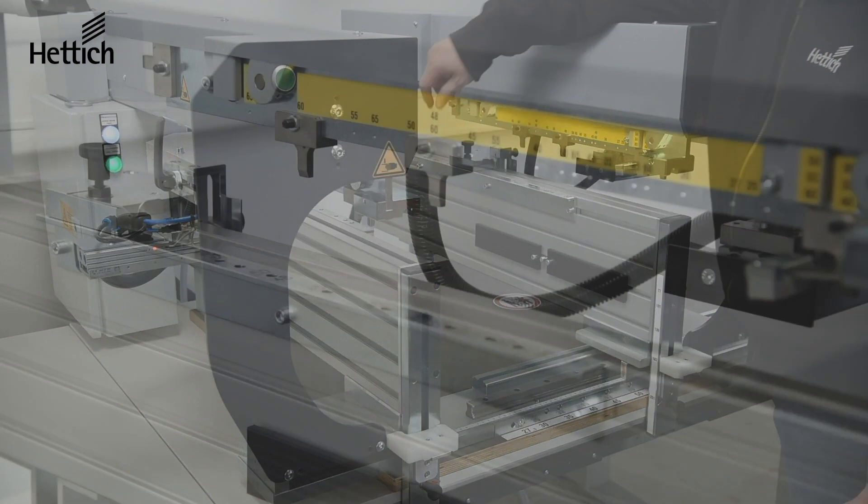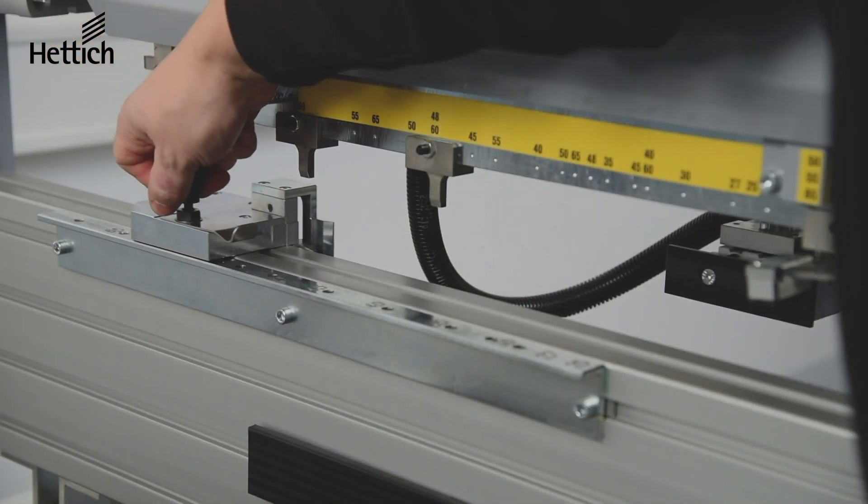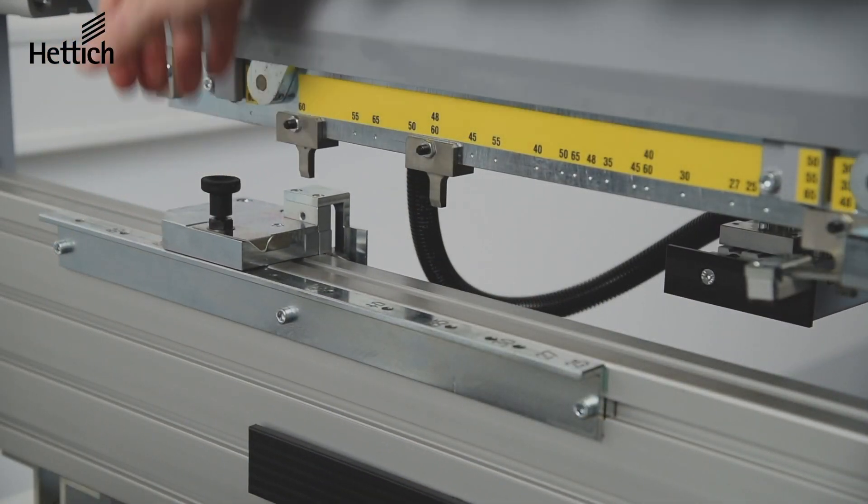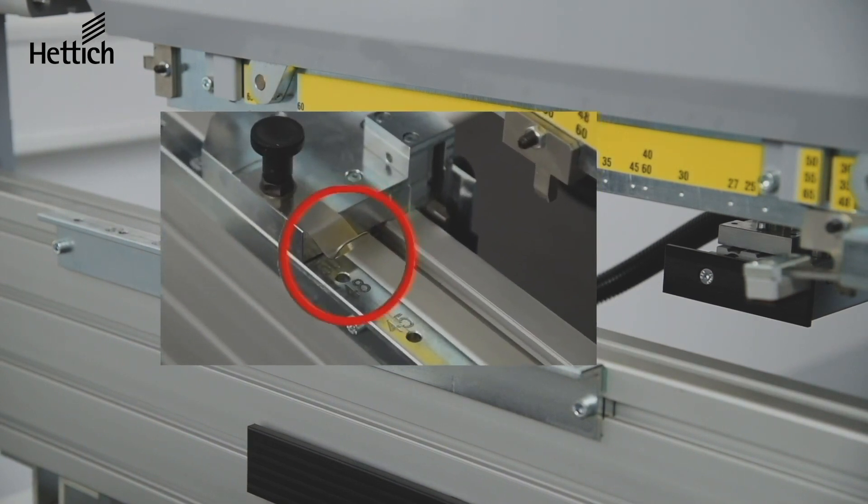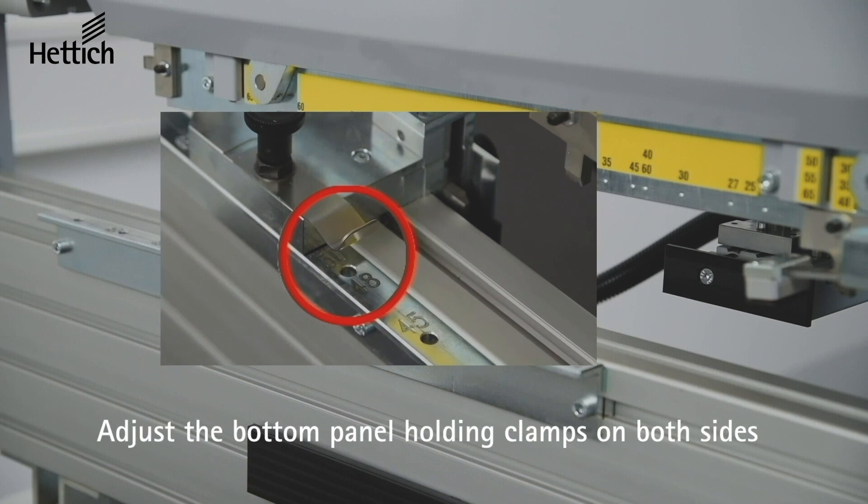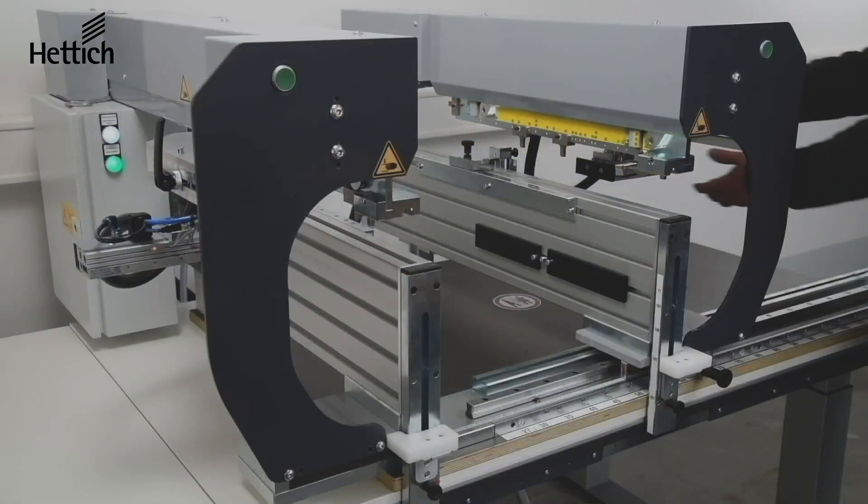The next step is setting up the bottom panel holding clamps for the correct length of profile. Simply lift the black button and slide the bracket to the appropriate length, which is clearly marked on the machine. Each length has a hole that will lock the black pin into position. This must be done on both sides of the machine.